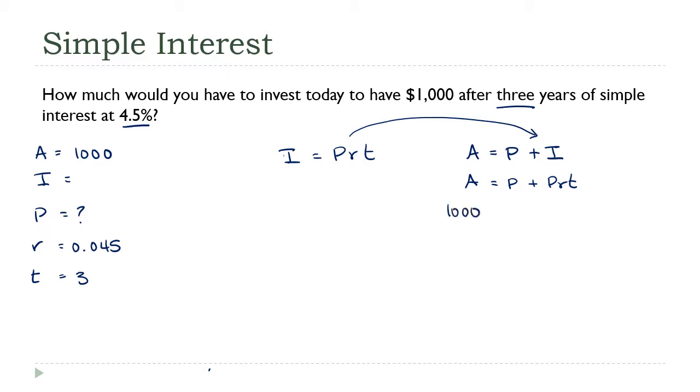All right, so let's put everything else in here. I'm going to put 1,000 in here for A. I don't know P. Plus PR is 0.045, and T is 3. Okay, let's see. Let's do a little cleanup. 1,000 equals P plus 0.045 times 3. That's 0.135 P. And now, look, I can combine those two terms together. This is 1,000 equals 1.135 P. And that's it. We're there.